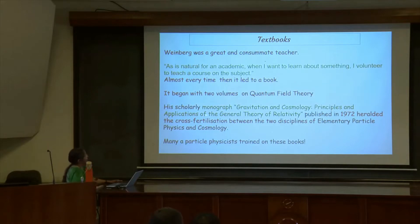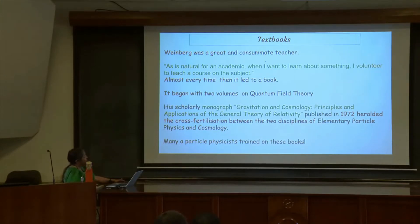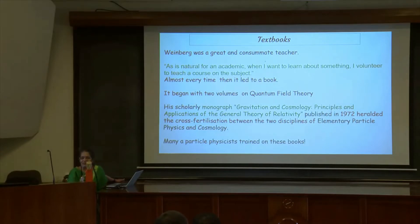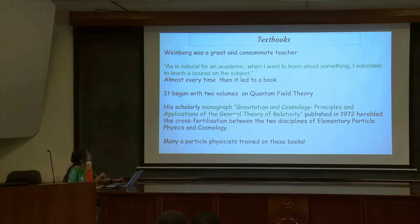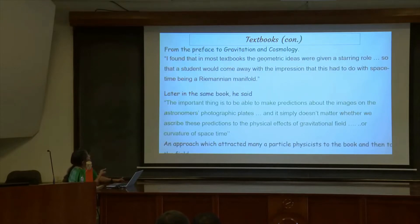His scholarly monograph on gravitation and cosmology — principles and applications of the general theory of relativity — was published in 1972. It is really the cross-fertilization of the two disciplines of elementary particle physics and cosmology. It is a book on cosmology that particle physicists like; it may not be a book that all cosmologists like. But it is responsible for a whole lot of particle physicists, including again yours truly, getting involved and trying to gain an understanding of cosmology and gravitation. Many generations of particle physicists trained on these three books.